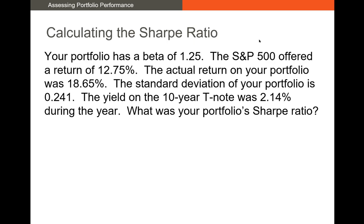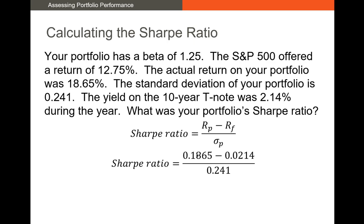Let's calculate the Sharpe ratio. We have a portfolio with a beta of 1.25, the S&P 500 returned 12.75%, the actual portfolio return was 18.65%, standard deviation was 0.24 (24%), and the 10-year T-note yield was 2.14% — our risk-free rate. Plugging into the formula: (18.65% − 2.14%) ÷ 24% gives us a Sharpe ratio of 0.6851. To interpret this, we'd compare it to the Sharpe ratios of other portfolios or managed funds with a similar objective.